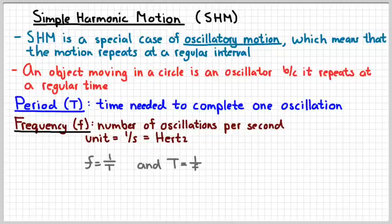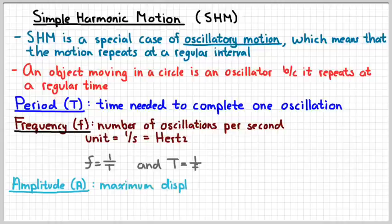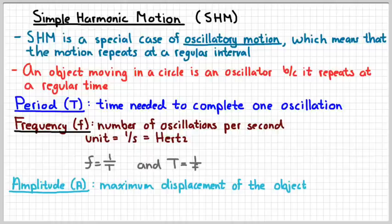For example, if you go around a circle two times per second, that would be a frequency. It takes you half a second, or the period of half a second, to go around once. The last definition we need is the definition of amplitude. Amplitude refers to the maximum displacement of an object that is moving in oscillatory motion.